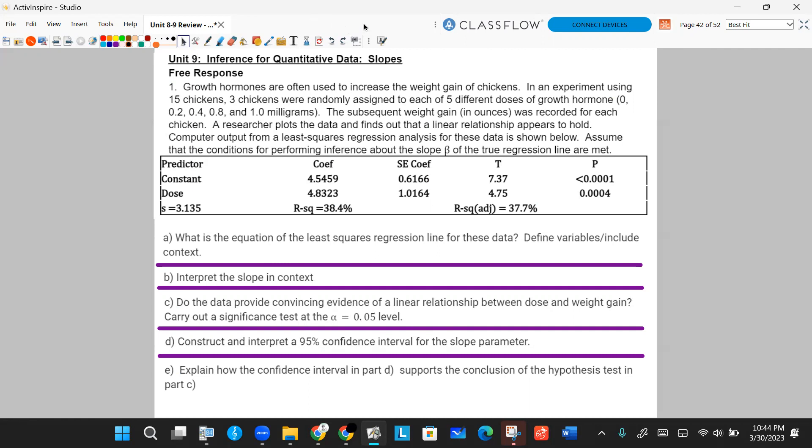So we've got a bunch of numbers in a table, and we're going to be asked a series of questions. Part A, what is the equation of the least squares regression line? Define the variables. Part B, interpret the slope in context. Part C, do the data provide convincing evidence of a linear relationship between dose and weight gain. Carry out a significance test at the 5% level. Part D, construct and interpret a 95% confidence interval for the slope parameter. And Part E, explain how the confidence interval in Part D supports the conclusion of the hypothesis test in Part C.